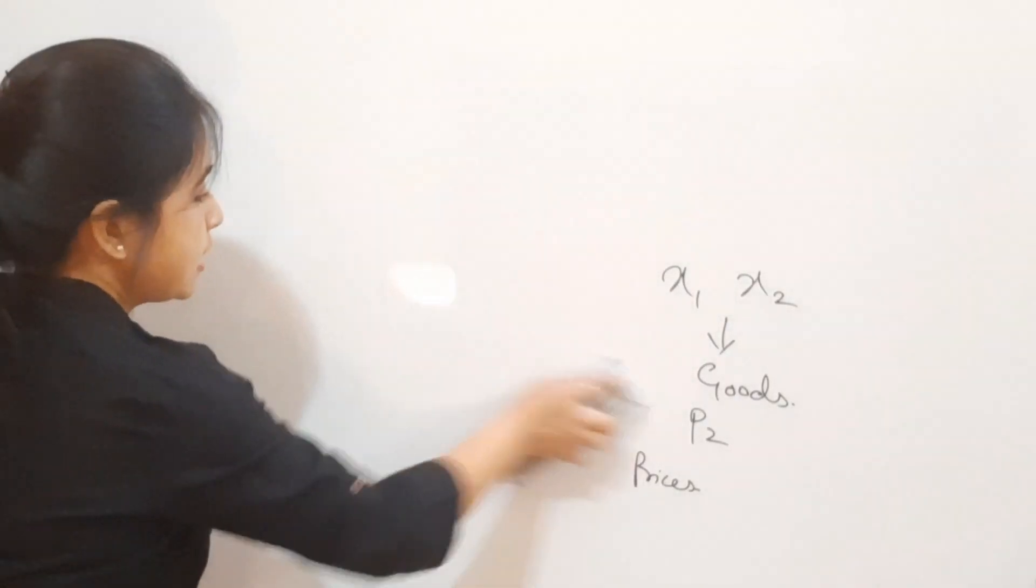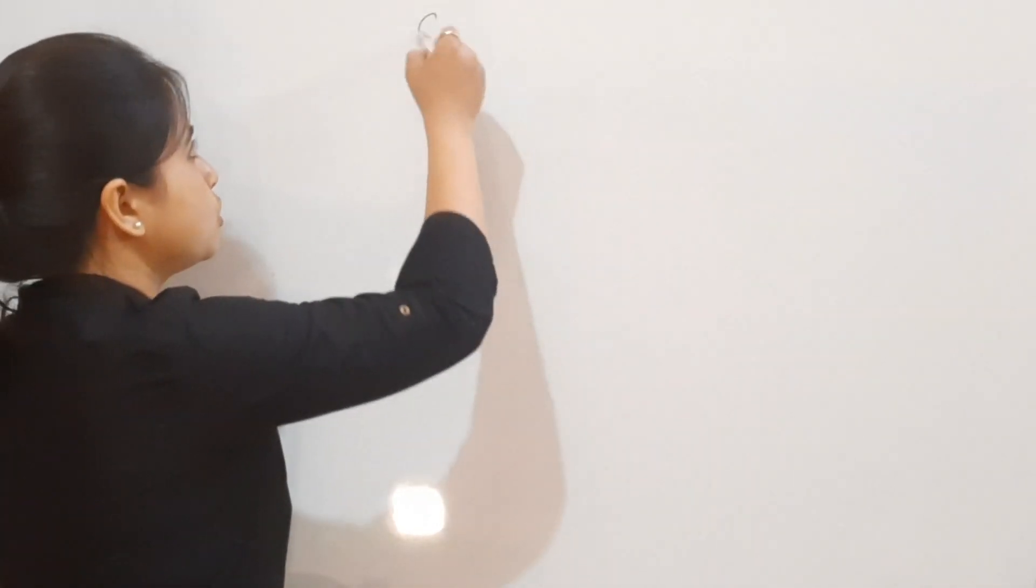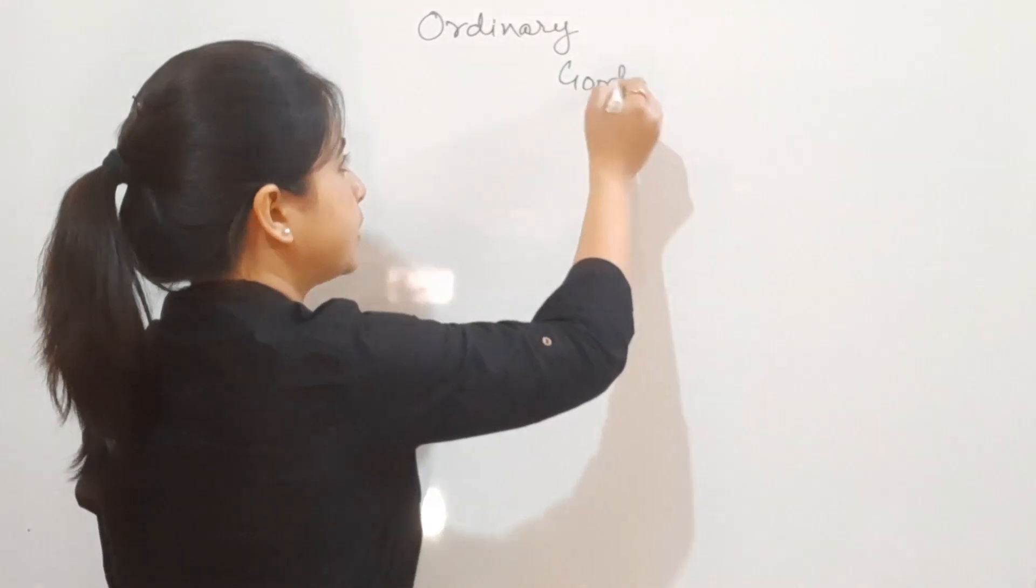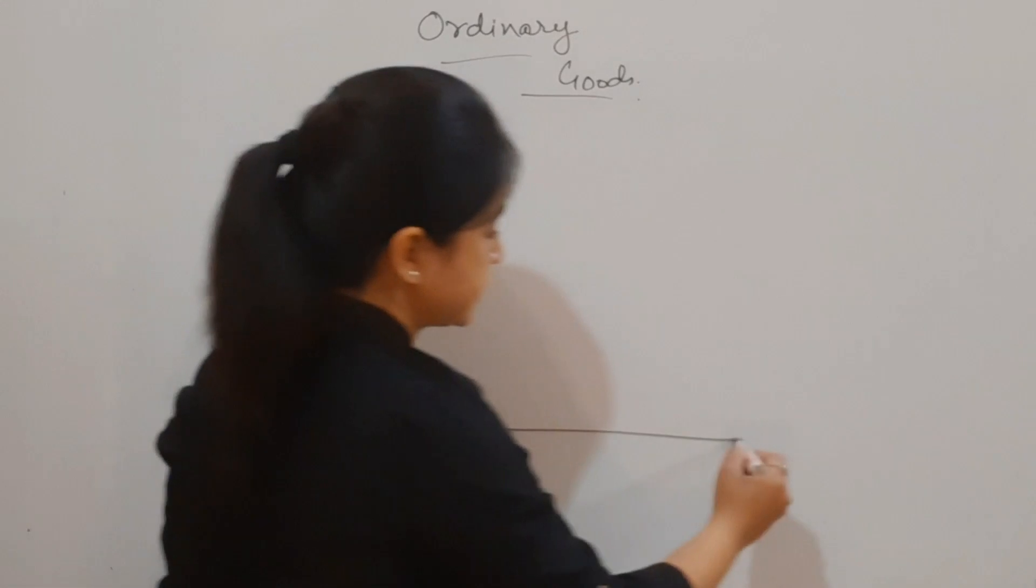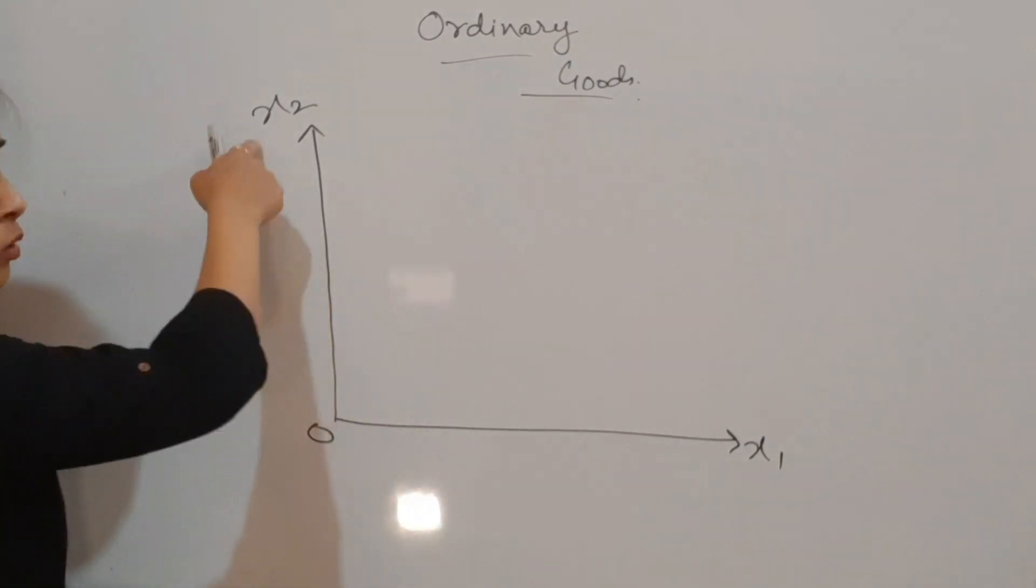I'll take help of a diagram. This is microeconomics from demand theory, so I'm hoping you're familiar with the IC curve and budget line. Let me plot it. This is our axis: good x1 and good x2.